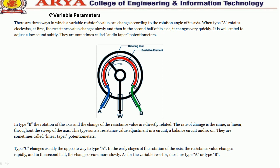Type B suits resistance value adjustment in balance circuits and so on, and is sometimes called a linear taper potentiometer. Type C changes exactly the opposite way to Type A. For variable resistors, most are Type A or Type B.